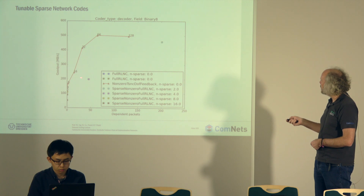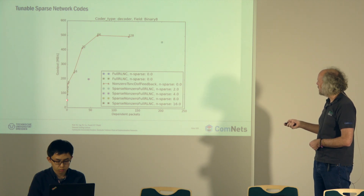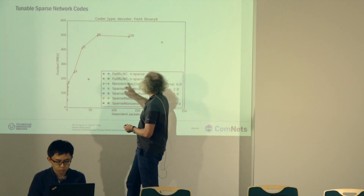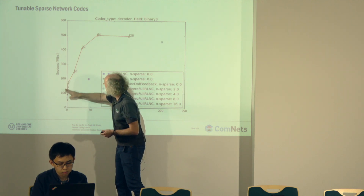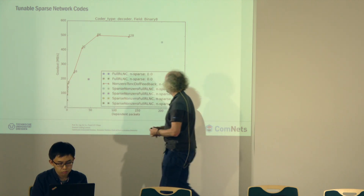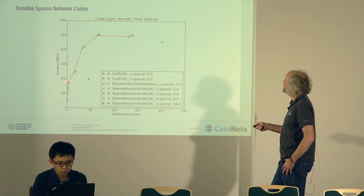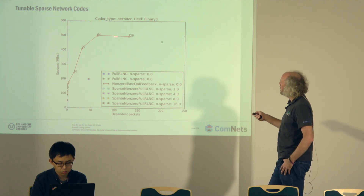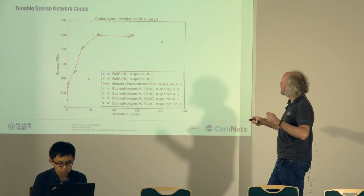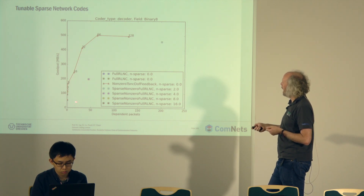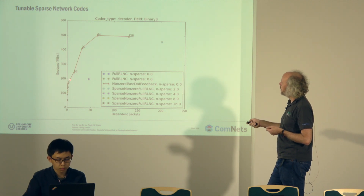The full RLNC is here, and you can see the goodput is not so much, but the dependency of the packets is not that large. Now if you take non-zero as an end-to-end feedback — which means one of the things where we can tell the other side how much sparsity we want — if we put more or less density in the code, then we need more dependent packets, but the goodput is still going up.